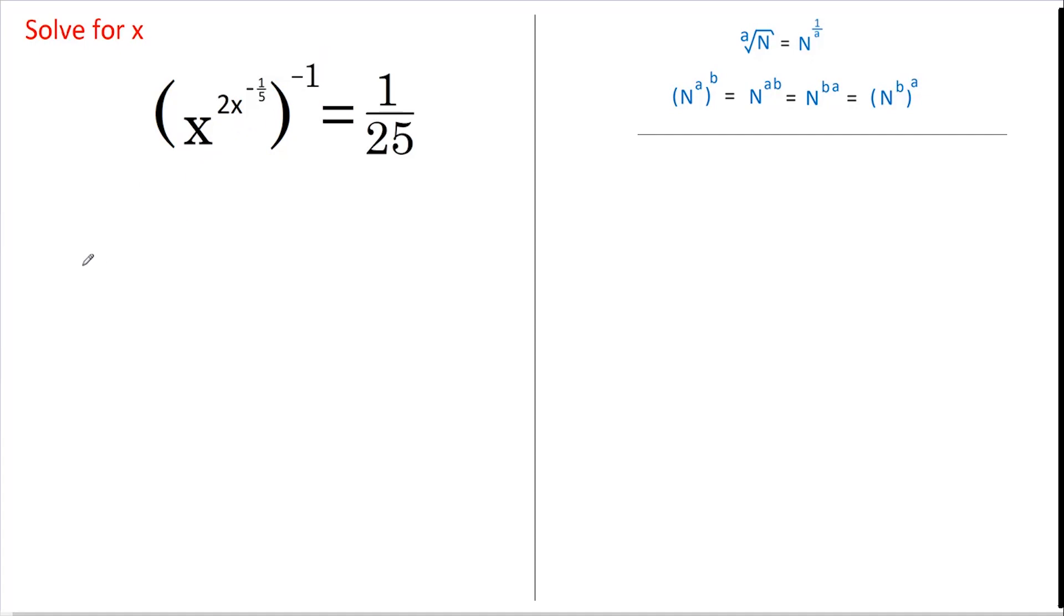So if I rewrite this as x to the power of 2x to the power of negative 1/5 without the negative 1, what I've done is inverted it. So this must equal 1 over 25 inverted, which is 25.